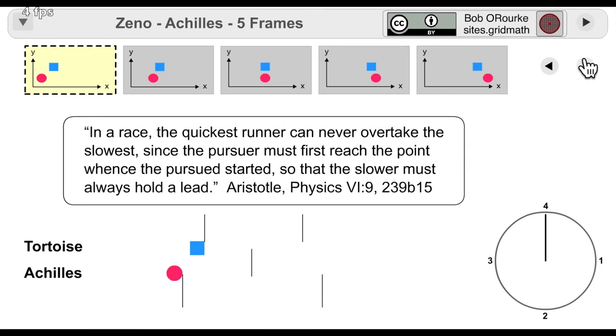The Achilles states that a slower runner with a head start can never be overtaken by a quicker since the slower always adds distance before the quicker can reach its last position.